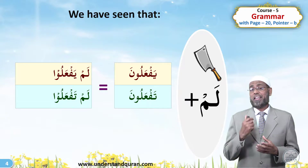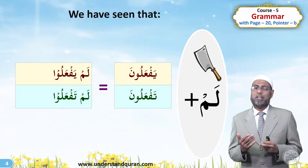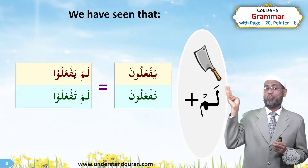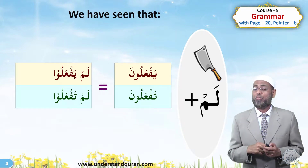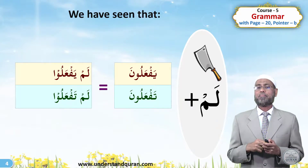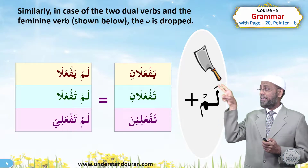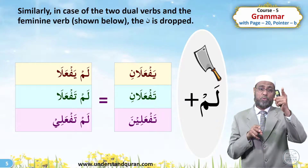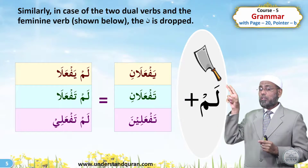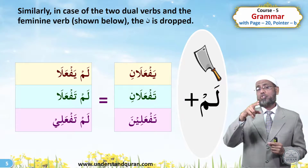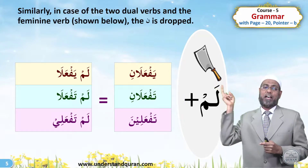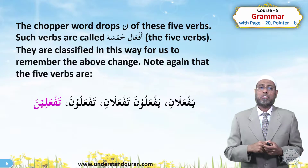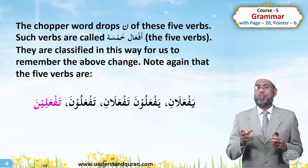We have seen in the last course that when we have a chopper word like lam followed by yafa'aluna or tafa'aluna, then the noons are dropped — like lam yafa'aloo, lam tafa'aloo, fa'il lam tafa'aloo, walam tafa'aloo. Similarly, if you have yafa'alani, tafa'alani, and tafa'alina, the noon is chopped in this case also. The chopper word drops the noon in these five verbs.